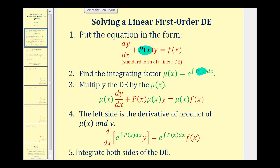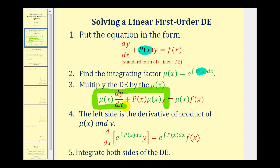Once we find the integrating factor, we'll multiply both sides of the equation by mu of x. Once we have the differential equation in this form, the left side is now equal to the derivative of the product of the integrating factor mu of x and y. This derivative must also equal the right side, which is the integrating factor times the function f of x. So once we have the equation in this form, we'll integrate both sides and then solve for y.